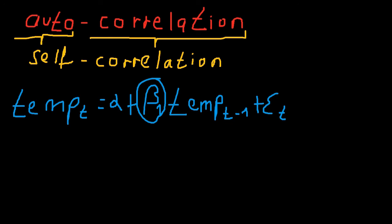Temp T minus 1 is a so-called lagged variable. So temp T minus 1 over here, this is a lagged variable, since it is a lagged value of the dependent variable.